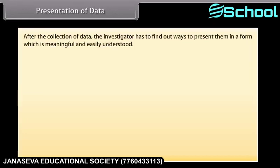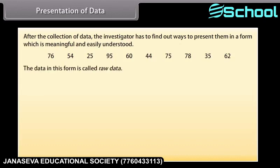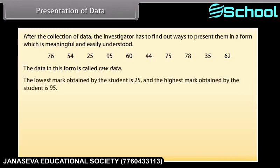After the collection of data, the investigator has to find ways to present them in a form which is meaningful and easily understood. Look at these numbers — these are the marks obtained by 10 students in the subject science. The data in this form is called raw data. The lowest mark obtained is 25 and the highest is 95. If we write these numbers in ascending or descending order, it would be easy to see the highest or the lowest marks.